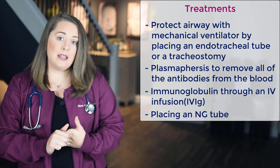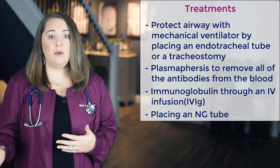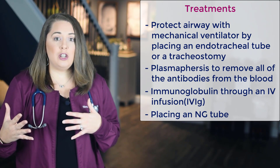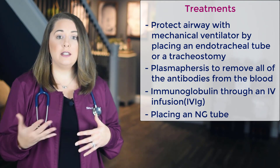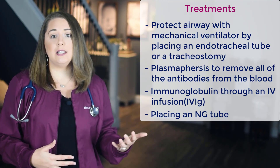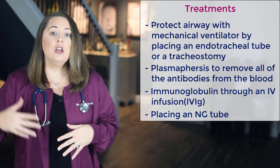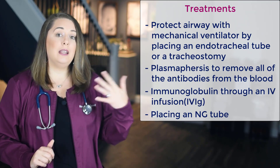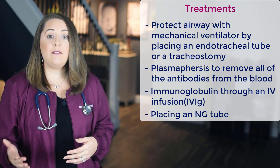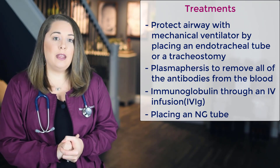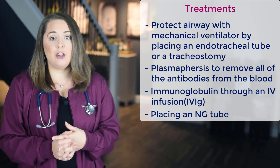The next treatment is plasmapheresis, which is basically like dialysis but for the plasma. The patient is hooked up to a machine that extracts the blood plasma and sends it through an exchange machine that removes the natural antibodies — because this is an autoimmune disorder where natural antibodies cause the breakdown of myelin. After plasmapheresis removes those antibodies, they are replaced with donor plasma containing a protein called immunoglobulin through an IV infusion, also written as IVIG. The goal is that healthy immunoglobulin will contain antibodies that fight against and dilute the Guillain-Barré antibodies attacking the patient's own myelin.